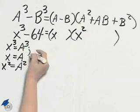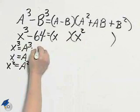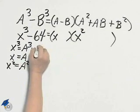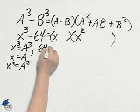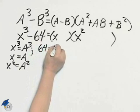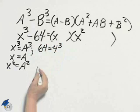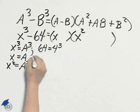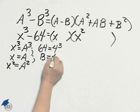If you play with factoring 64, you will find out that 64 is 4 cubed. So for B cubed, we have 4 cubed — plane B will be plane 4.